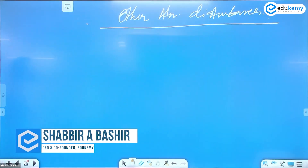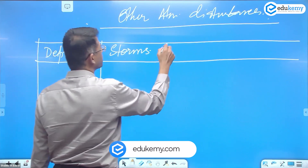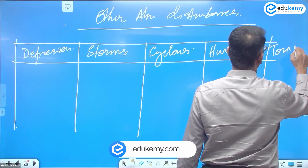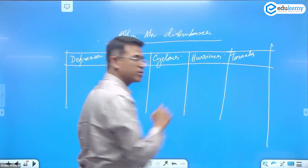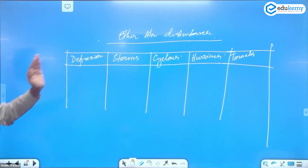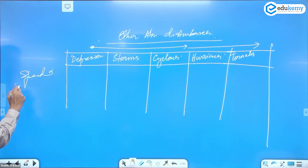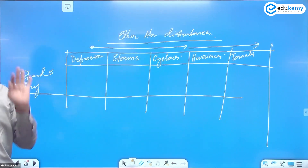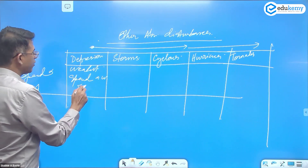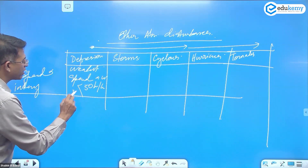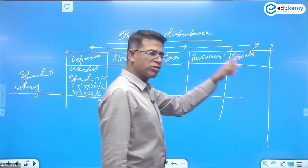I'm giving you a table of atmospheric disturbances: depressions, storms, cyclones, hurricanes, and tornadoes — all types of atmospheric disturbances that become more and more devastating in terms of speed and intensity. Depressions are the weakest ones, with wind speeds less than 50 kilometers an hour, generally in the range of 30 to 40 kilometers an hour. They are the least devastating.